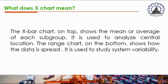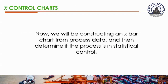The X-bar chart on top shows the mean or average of each subgroup and is used to analyze central location. The range chart on the bottom shows how the data is spread, and is used to study system variability.